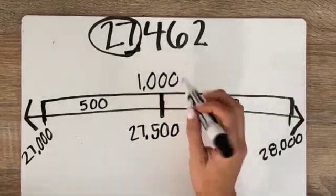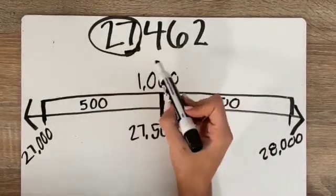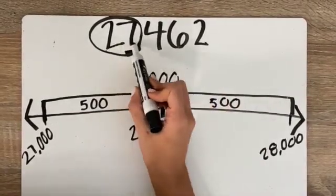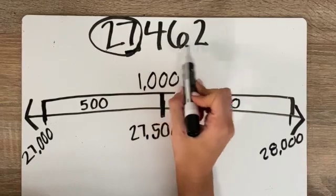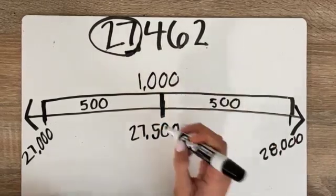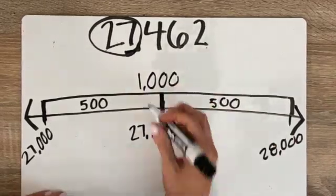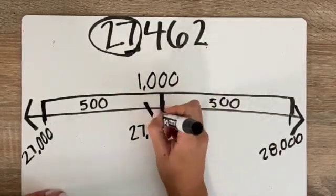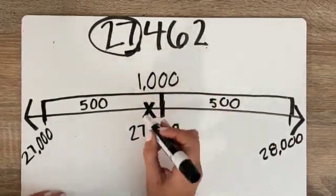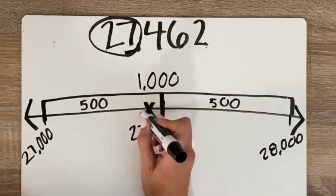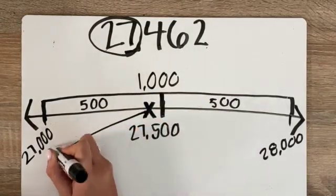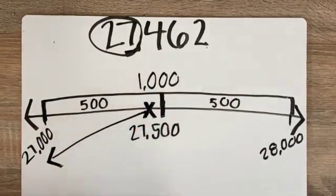That's the midpoint. And I know that 27,462 is less than 27,500, so it would be somewhere over here. So I would round down to 27,000.